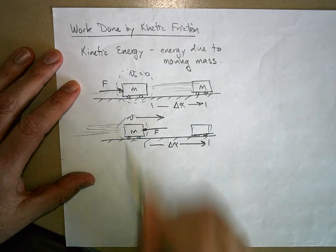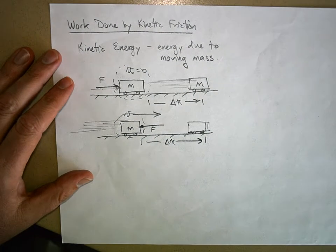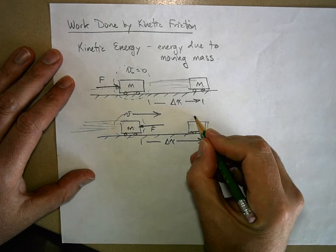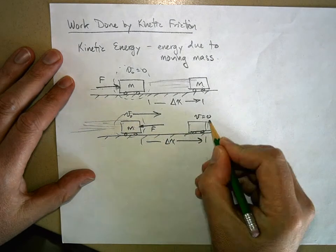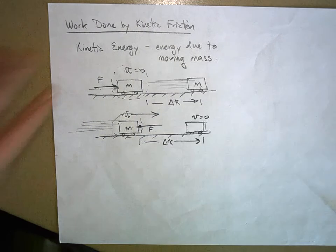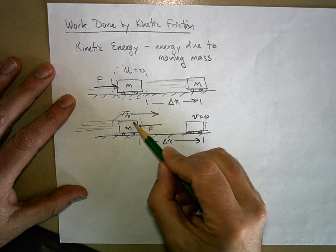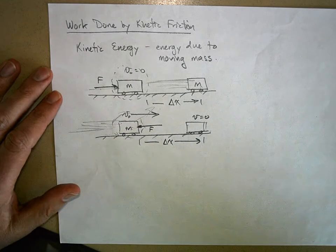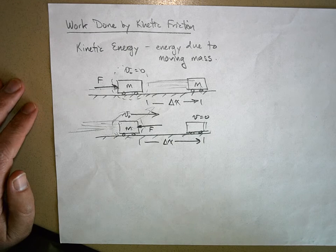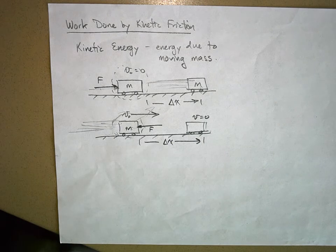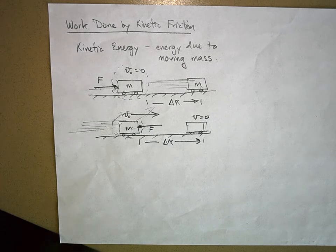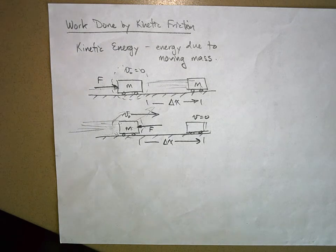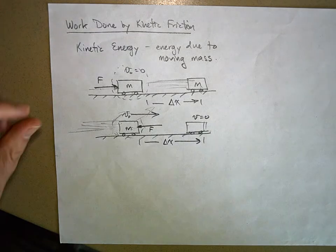Where did that energy go? The object had energy, then when you bring it to a stop — here's v-naught and here's v-final — that energy had to go somewhere. If this is the boundary of my system, the energy left my system. Think of energy like a substance that gets poured from one container into another — people give you energy, people take energy away. That's a really useful way of thinking about it.